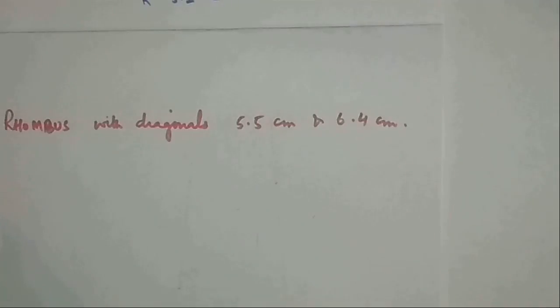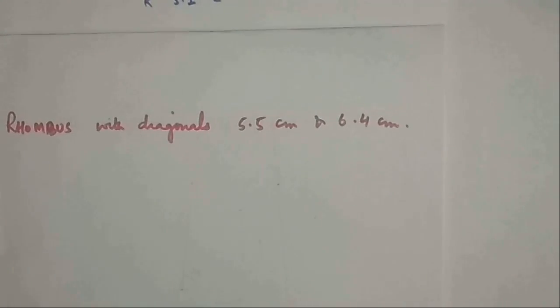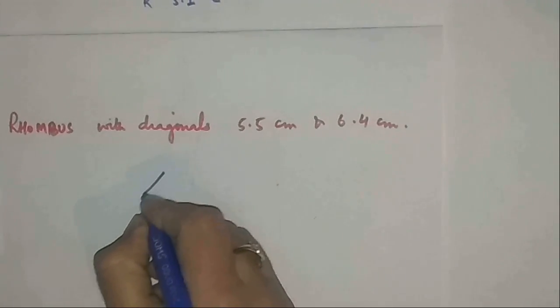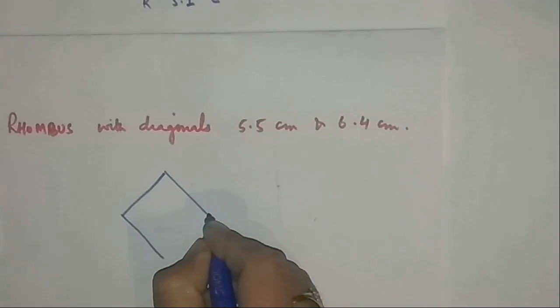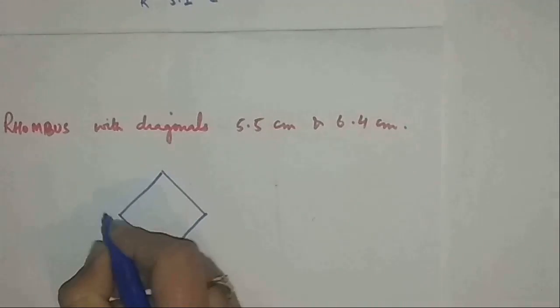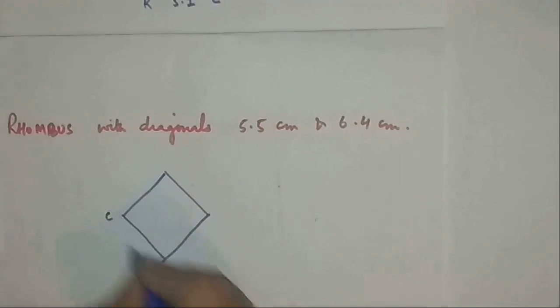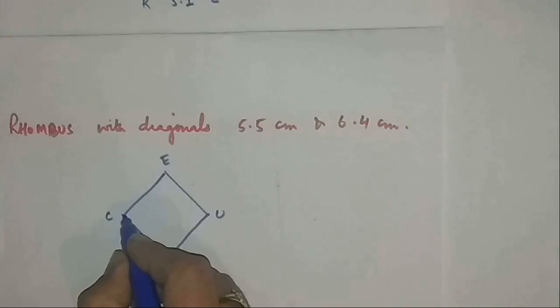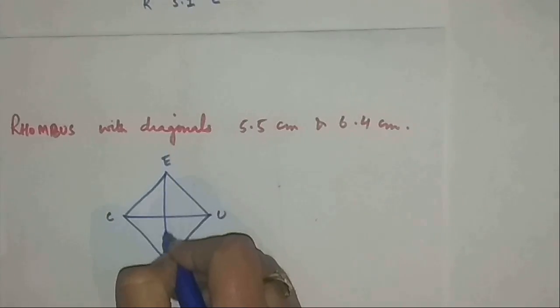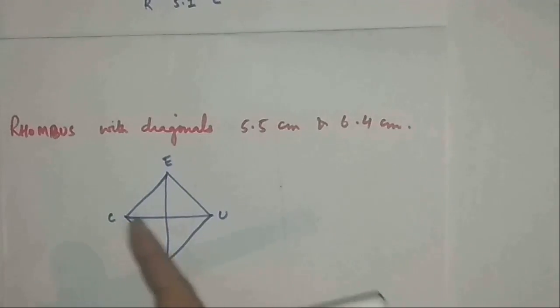Hopefully you might be remembering that and knowing how to construct a rhombus with only diagonals. So it will go like this. You can name it like you want. Let us name it as CLUE. Only the diagonals, the measurement of diagonals is given, so how will you construct it?